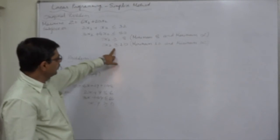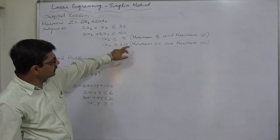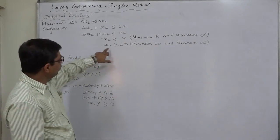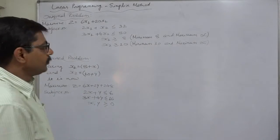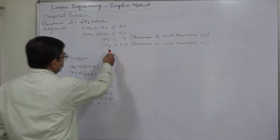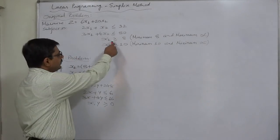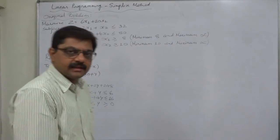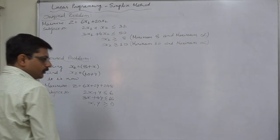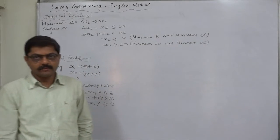Similarly, x2 greater than or equal to 10, the interpretation is the minimum value of x2 can be 10 and maximum can be up to infinite. Now, looking to the problem having greater than or equal to sign, primarily we think that we have to use Big M method or two-phase method to solve this problem.